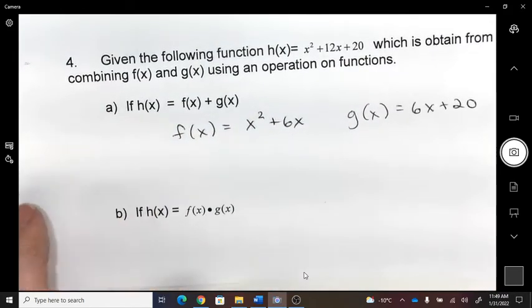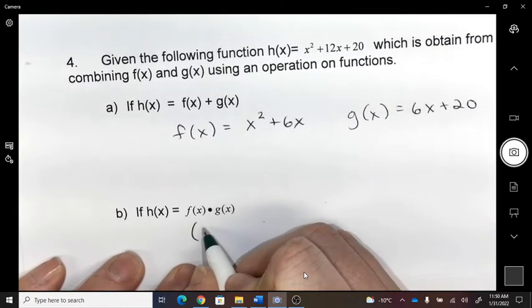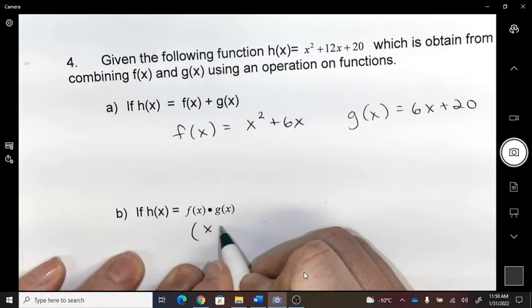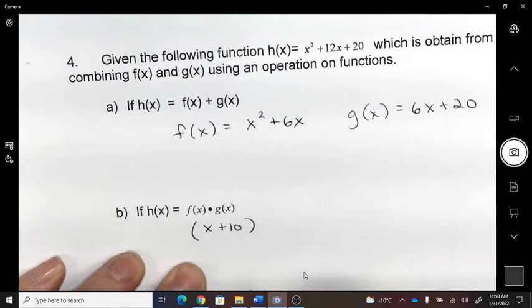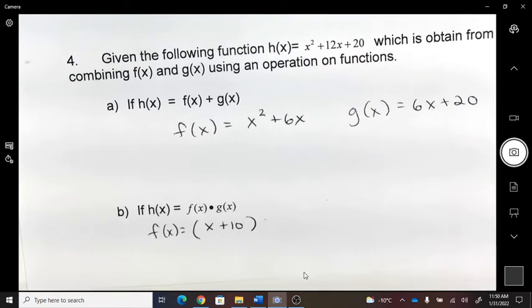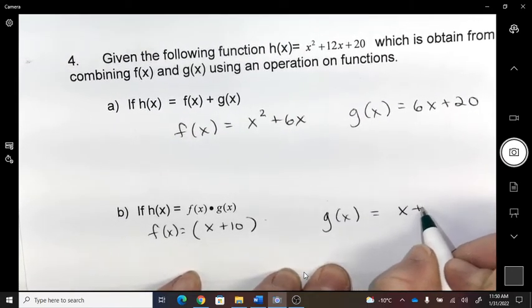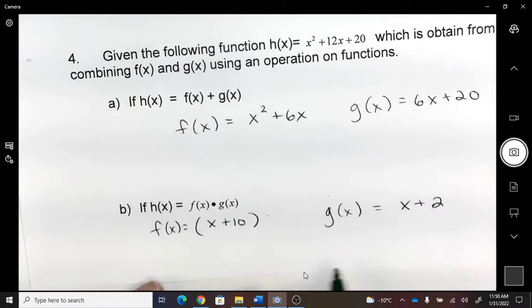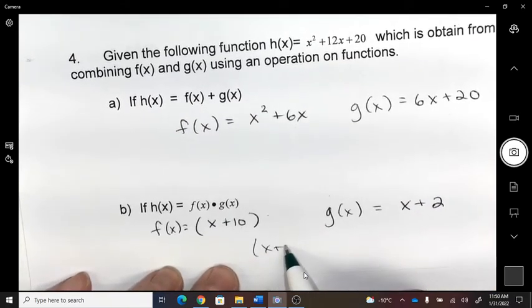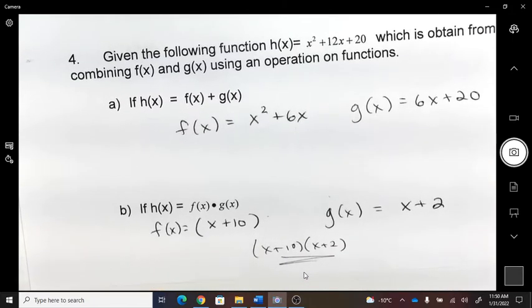And now I have to make two functions that would multiply. So let's say f of x was x plus 10. And g of x was x plus 2. When I would multiply those, you can see that that would foil and work to get me the h function.